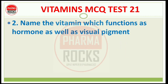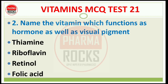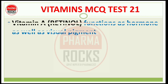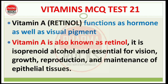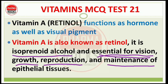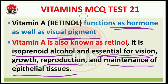Question number 2: Name the vitamin which functions as a hormone as well as a visual pigment. Options: Thiamine, Riboflavin, Retinol, and Folic Acid. The right answer is option C — Retinol. Vitamin A, known as retinol, functions as a hormone as well as a visual pigment. It is the isoprenoid alcohol essential for vision, growth, reproduction, and maintenance of epithelial tissues.